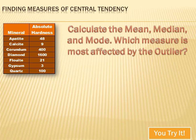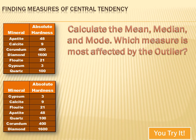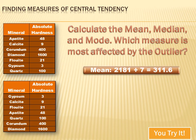We've got a data set listing the absolute hardness of a variety of minerals, and we're supposed to calculate the mean, the median, and the mode, then determine which measure is most affected by an outlier. The first thing is to put the values in order from least to greatest. There is clearly an outlier: 1600. The hardness of diamonds is way out of line with the other measures. The mean is the total of all values divided by 7 data points, which totals 311.6.